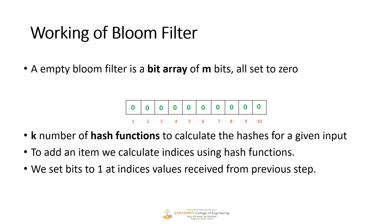A bloom filter takes an arbitrarily large array and initially all elements of the array are set to 0, as we can see in this example. In a bloom filter we will have n number of hash functions. Whenever we want to enter any particular value into the bloom filter, we apply that value to all hash functions and we get some result. A hash function is a function which, when given some input, produces an output.